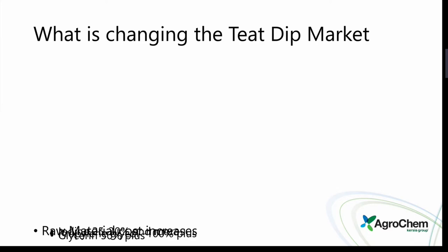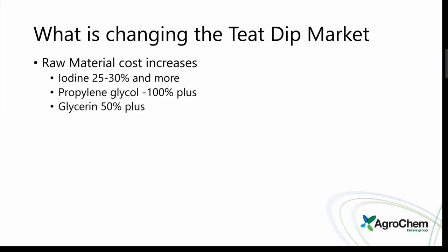What's changing in the dip market? Raw material increases — iodines we've seen 25 to 30 percent increases. The cost of propylene glycol has gone up 100 percent, maybe even more from what it was a year to a year and a half ago. Glycerin going up 50 percent more than it was in the past as well. All these raw material costs are causing a lot of people to look at their dips and say, if they've been using 10 percent, let me try five percent. If you've done that this year, make sure you're keeping that in mind as you go into the winter, and try to get back to a proper level of what you need.